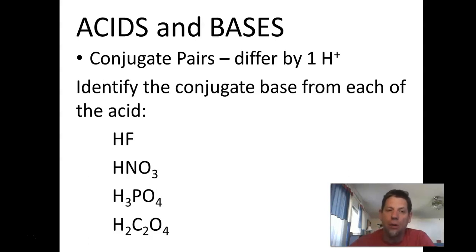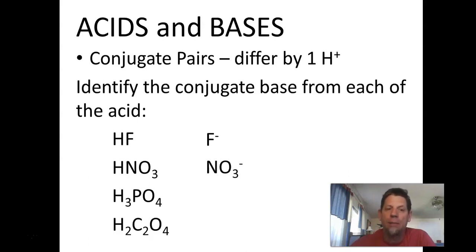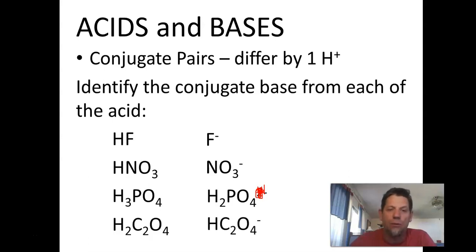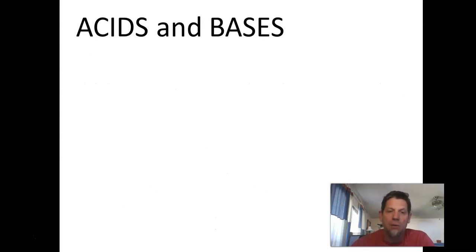Since everything differs by one H⁺, acids have one more H than the bases. So we take the H off of the acid to make its conjugate base. HF becomes F⁻ — we took away the H and the charge drops by one. HNO₃ becomes NO₃⁻. H₃PO₄ — we drop one H and the charge by one — becomes H₂PO₄⁻. Note: that is minus one, not minus two — that was my error on the slide. And H₂C₂O₄ becomes HC₂O₄⁻. One H is the difference between all of those — that's conjugate pairs.